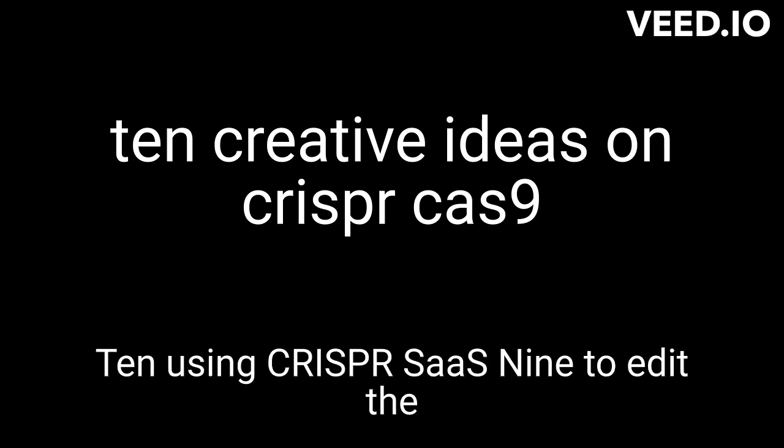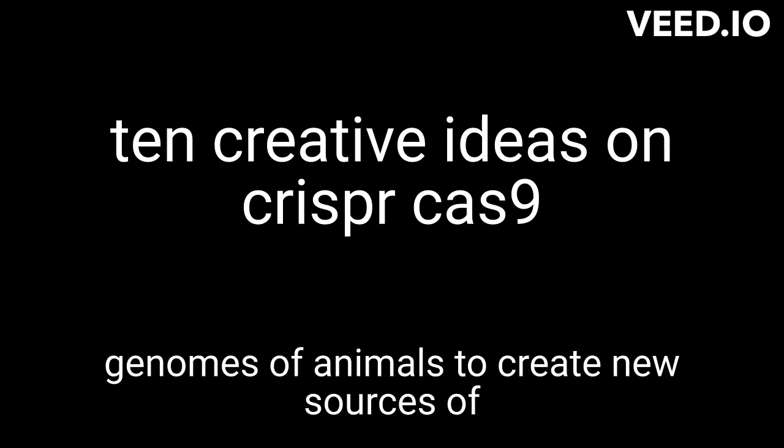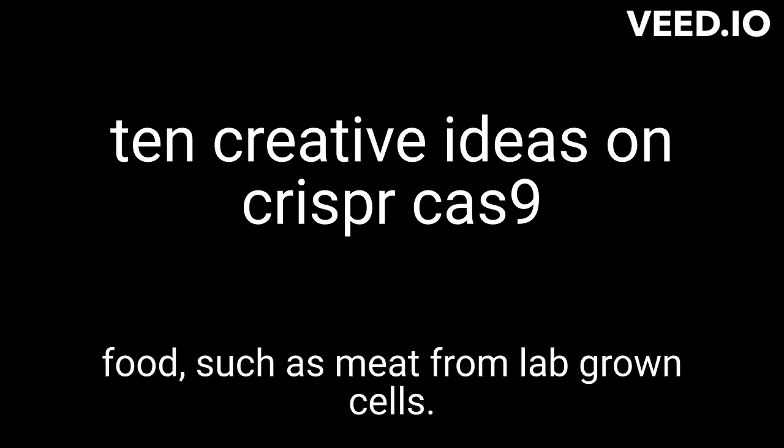10. Using CRISPR Cas9 to edit the genomes of animals to create new sources of food, such as meat from lab-grown cells.